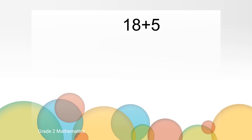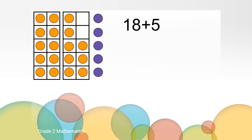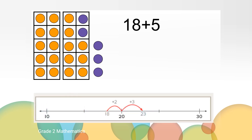I bet you came up with a great strategy to solve 18 plus 5. I am going to put some 10 frames on the screen to represent this problem. How can we use these 10 frames to figure out 18 plus 5? Maybe you filled the second 10 frame to make another 10. It's easier to figure out 20 plus 3 than 18 plus 5. Sometimes second graders like to use number lines to represent their strategy. If we were to use a number line, what jumps could you make?